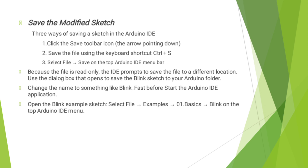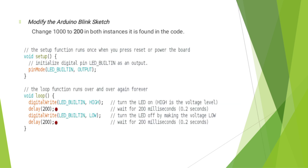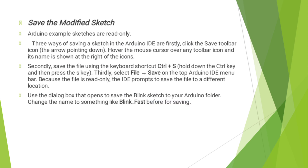Open the Blink example sketch, select File, then go to Examples, then go to Basic and go to Blink on the Arduino IDE menu. This is the modified Arduino Blink sketch. Before our program, the delay value was 1000. Here I changed the value to 200, that is 0.2 seconds. After modifying your program, you should save your modified sketch using the procedures previously discussed.